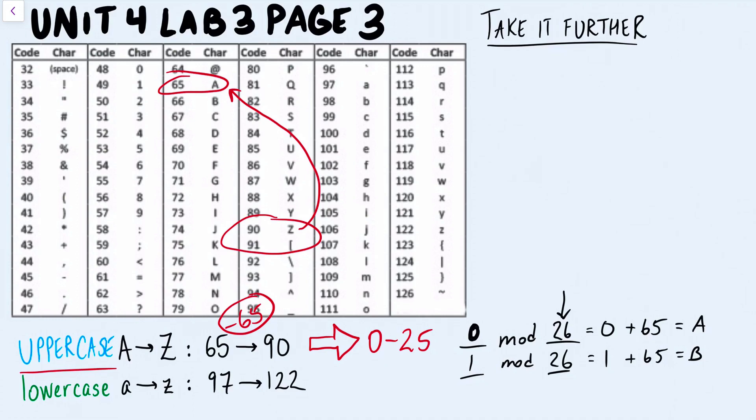So if I have the number 25, 25 is going to be uppercase Z. And if you just think about it, 25 plus 65 will take me right back to Z. But if I mod 25 by 26, I end up with the number 25.